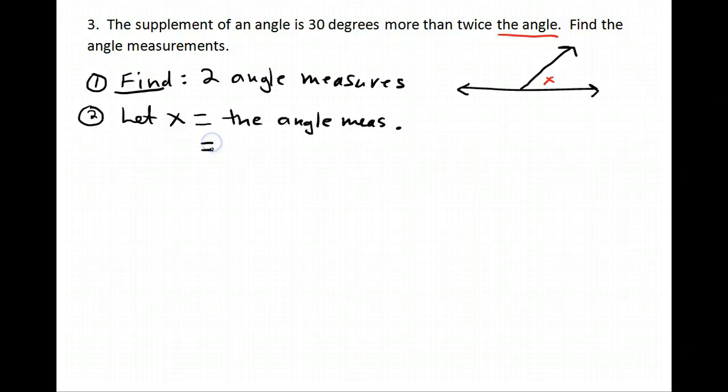If x equals the angle measure, I need the supplement. Now it says the supplement is, here comes, 30 more than twice the angle. So, 30 more than means plus 30, 30 more than twice the angle, so 2x plus 30. So, this guy over here is 2x plus 30.